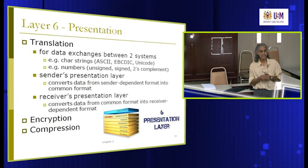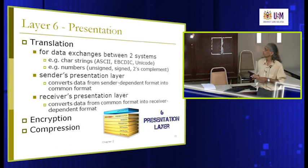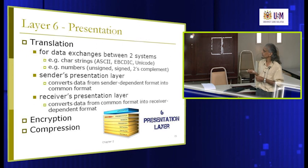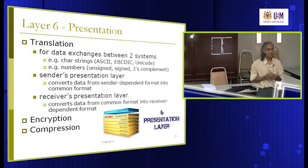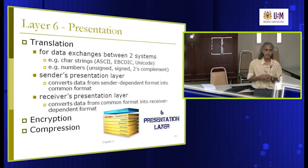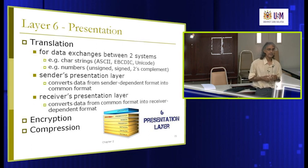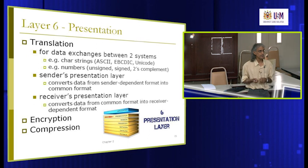Layer 6, the presentation layer, basically does three things: translation, encryption, and compression. Translation converts from one data format to another. When you have different machines running different services — for example, one machine running Windows, another running iMac, Linux, or Unix — they could be on different platforms and their internal data formats might be different.